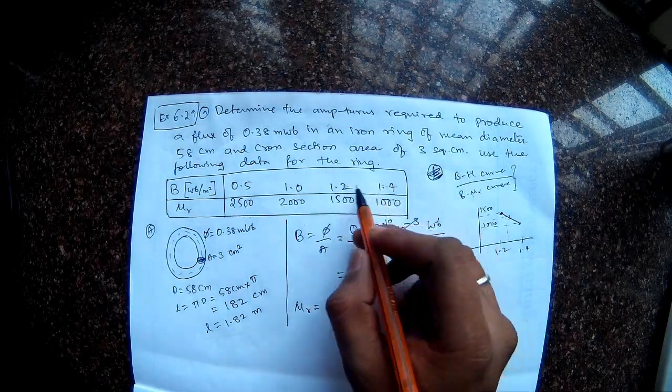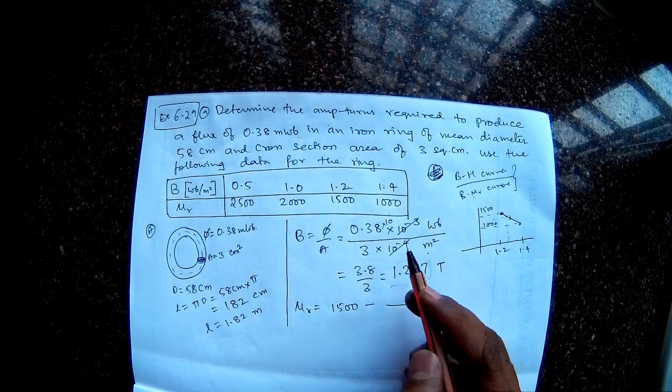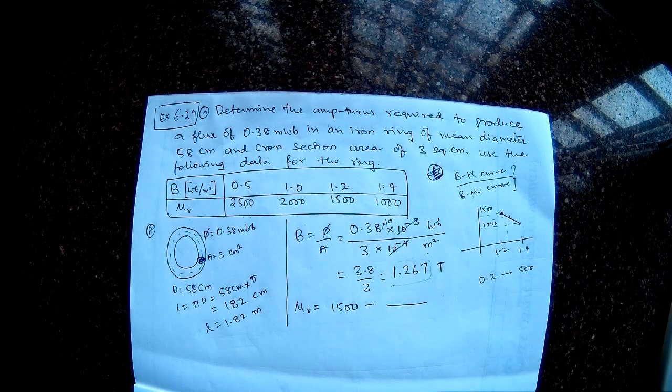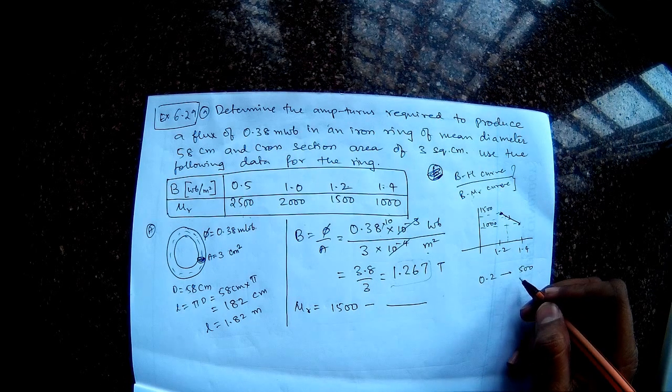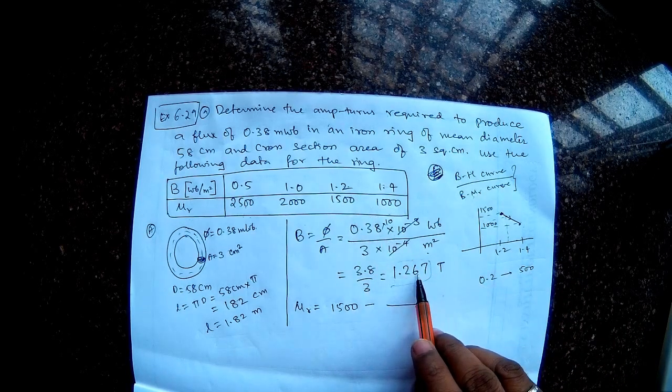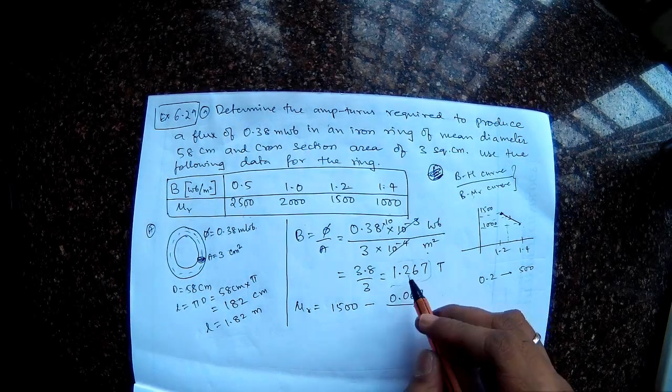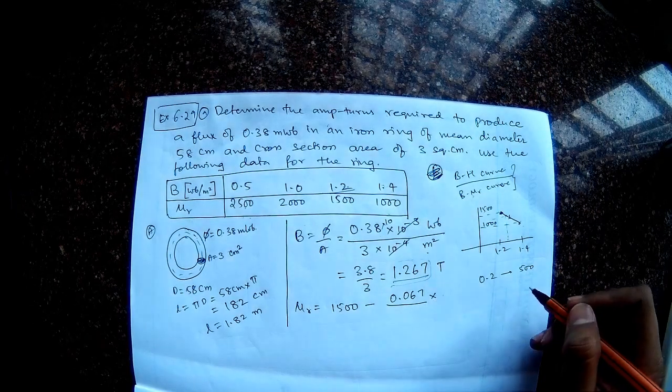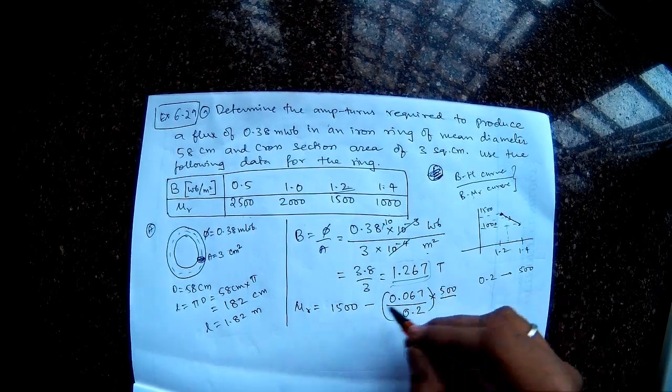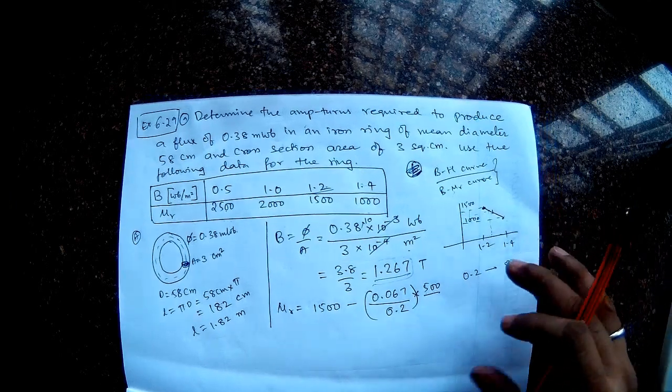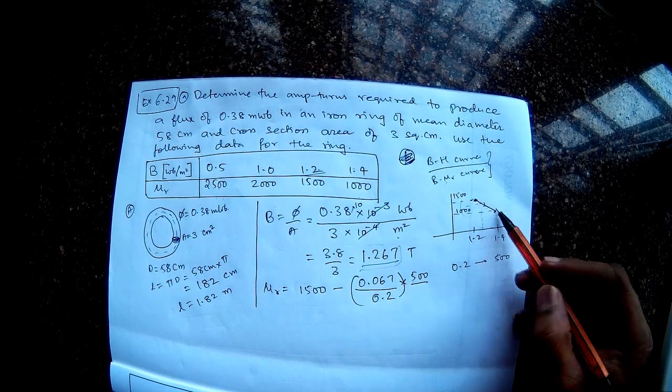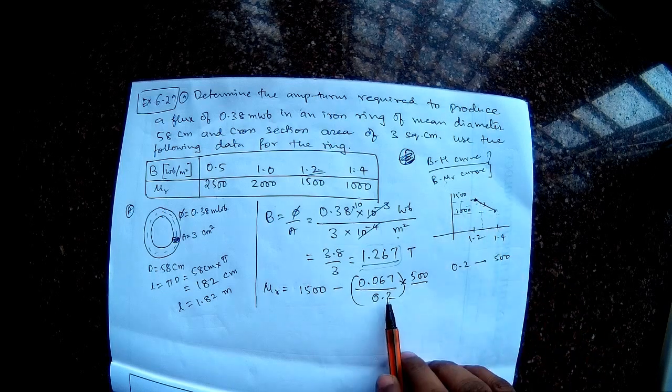So for a gap of 0.2, the flux density is reducing, so for 0.2 I am losing 500 value. So let me do that. So this is 1.2, so 0.067. So 0.067 is the difference between 1.2 and this one. This multiplied by 500 divided by 0.2. So this is a simple interpolation formula. I am just writing it down by observation. If you get doubt here, just use your basic coordinate geometry to do that. So it is just proportionally I am reducing.